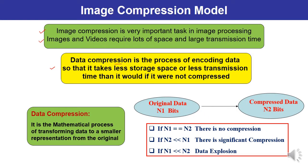Mathematically, data compression can be represented as a process of transforming data to a smaller representation of the original. If original data consists of N1 bits and compressed data consists of N2 bits, then compression is being applied and you are getting compressed data which consists of N2 bits. So obviously if you are applying compression, N2 must be less than N1. If N2 is less than N1, it means there is significant compression.